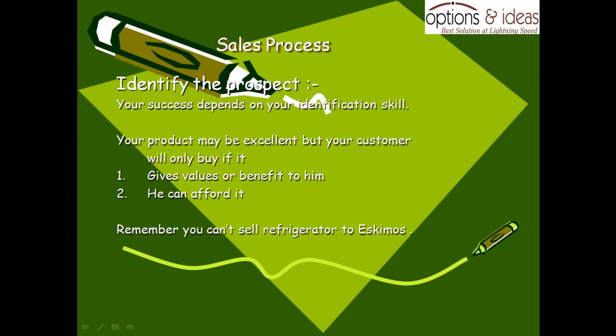For the first point, to identify the prospect, we need to note the details. Success depends on your identification skill — how to identify those customers and clients. We need to determine their best fit. For example, if you want to buy a car but you can't afford it, you don't know how to approach it. Affordability is the choice.